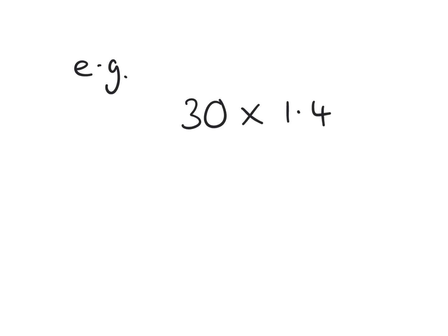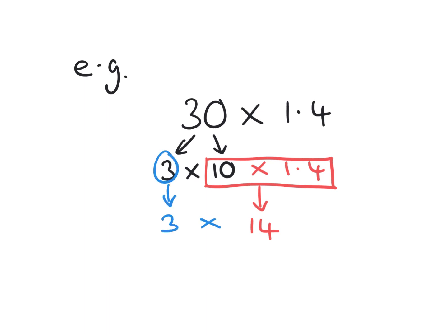Now the first thing to do here is to break up the 30 into 3 times 10, and then times by 1.4. This is the first part of the calculation. Multiplying by 10 means we move one space bigger, so it becomes 14, and then it opens up the rest of the calculation. We have 3 times 14, which is 42. The priority is to remove that decimal, so once you multiply it by 10, you remove the decimal and you've got a straightforward mental maths calculation.